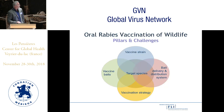When we talk about challenges, we first have to look at what the pillars of oral rabies vaccination of wildlife are: the vaccine strains on the one hand, vaccine baits on the other — where baits play an important role — then an optimal bait delivery and distribution system, and last but not least, an optimal vaccination strategy in the context of the wildlife reservoir host being targeted.